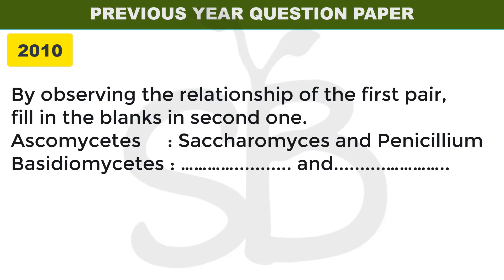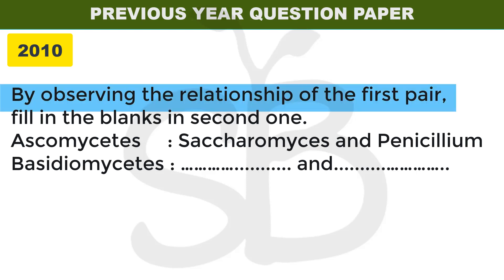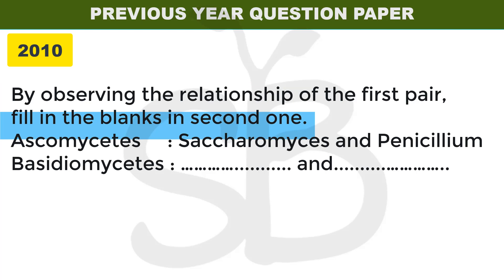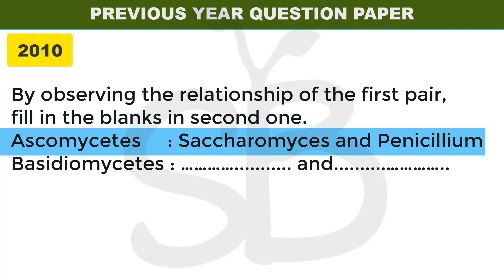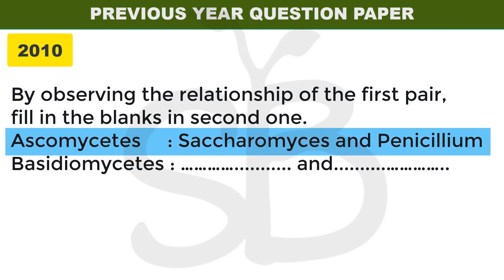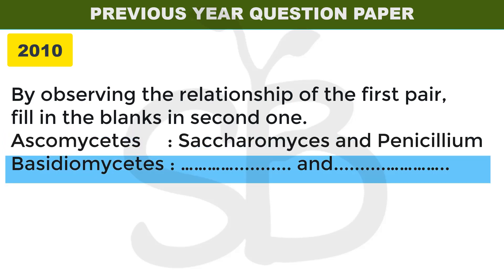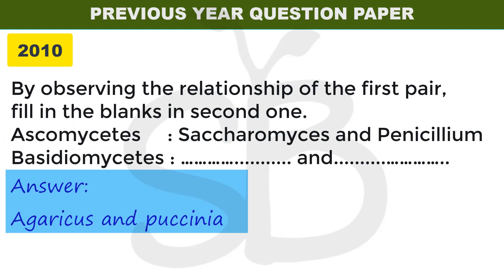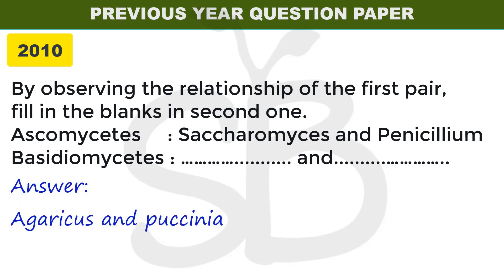Next question, 2010 annual exam: by observing the relationship of the first pair, fill in the blanks. Ascomycetes includes Saccharomyces and Penicillium. Basidiomycetes includes dash — the answer is Agaricus and Paxina. With this, we have discussed the question papers from 2010 to 2021.